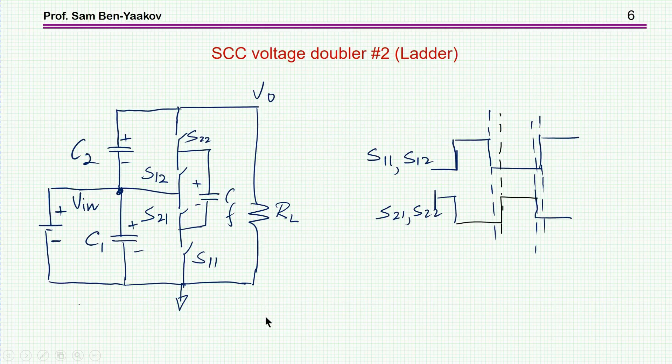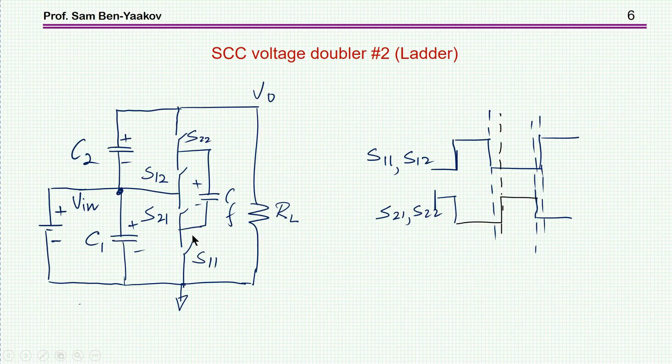The other converter has this topology. It's sometimes called the ladder type converter because it has a structure of a ladder. This capacitor is connected to one capacitor here, then to this capacitor here. We have the input side, an input filter, and then this is the flying capacitor. I'm assuming that S11 and S12 are operated together, as well as S21 and S22. We need a dead time between them so there'll be no short circuit.